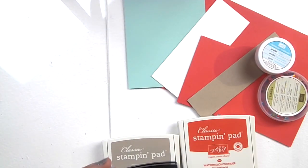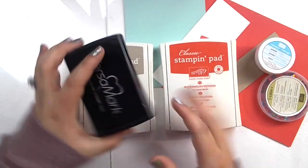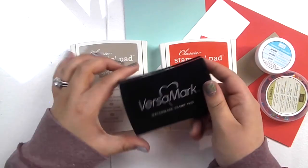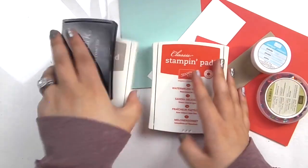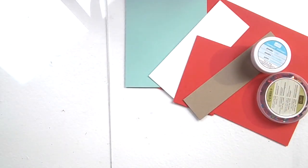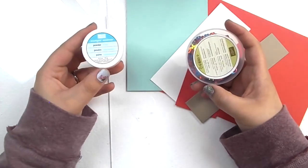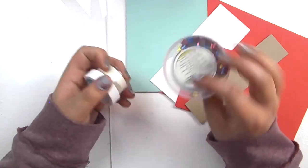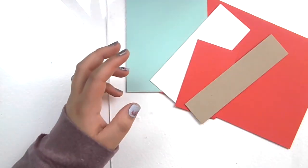For our ink, we're going to be using crumb cake, watermelon wonder and Versamark. And we are going to be using the clear embossing powder, as well as the brights sequin assortment. So we'll be using just a couple of those.